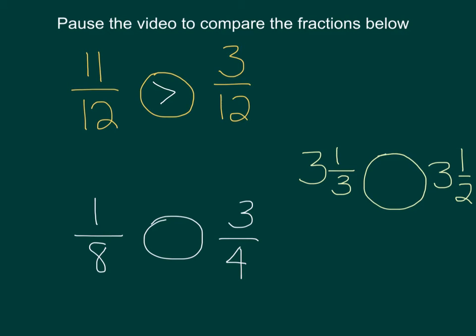And then you have 1 eighth compared to 3 fourths. You want to get the same denominators, so we're going to turn 4 into 8 by multiplying it by 2, and turn 3 into 6 by multiplying it by 2, and we can compare and we see that 6 is greater than 1.